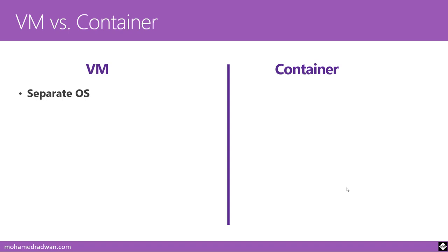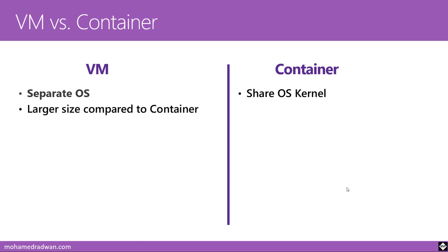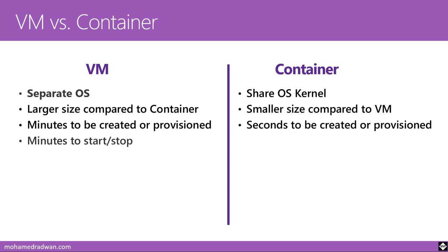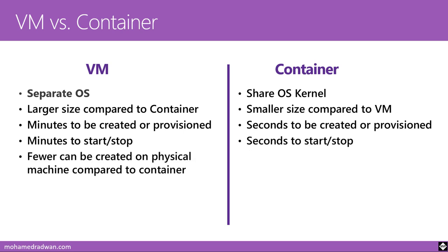Here's a quick comparison: Virtual machines have a separate OS, while containers share the OS kernel. VMs are larger in size; containers are smaller. VMs take minutes to create or provision; containers take seconds. VMs take minutes to start or stop due to OS boot overhead; containers take seconds. Fewer VMs can be created on a physical machine compared to the many containers that can run on the same resources.